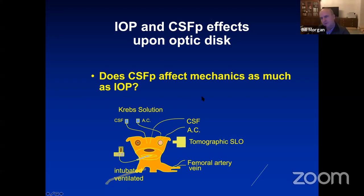If you elevate the intraocular pressure to 43, you get very marked mitochondrial activity, because the mitochondria are feeding all those little motors that move things up and down, and they have to work hard going uphill against that gradient.